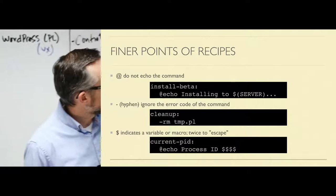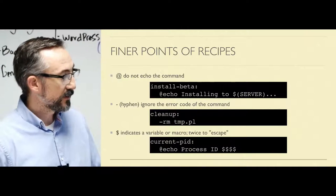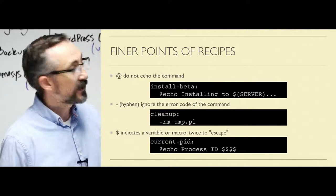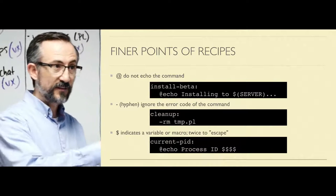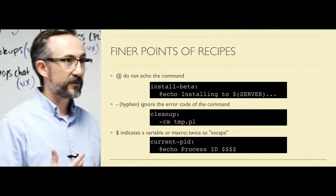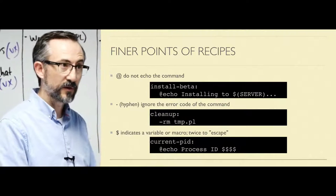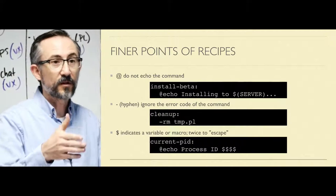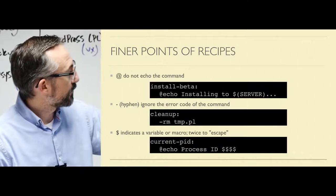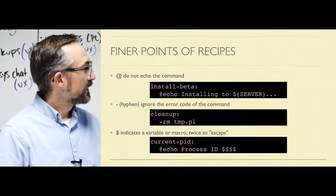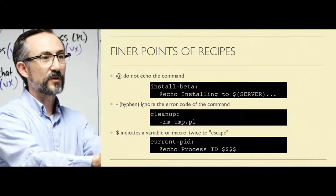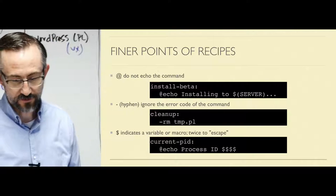A dollar sign in a recipe, target, or dependency list indicates that a variable is coming, and Make is about to translate that from its variables into their values. If you need a literal dollar sign, you have to escape it with another dollar sign — dollar-dollar becomes just a regular dollar, and that dollar sign will then be passed to the shell. In this case, 'echo process id $$$$' — those four dollars become two dollars, and that gets handed to the shell, which realizes it's the process ID of the current process.